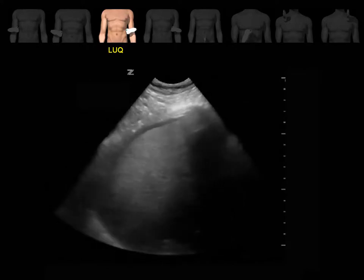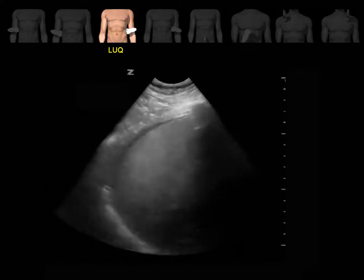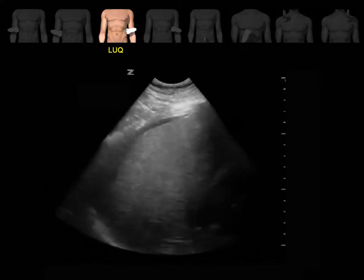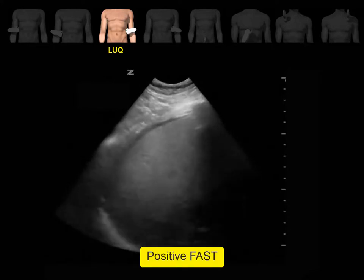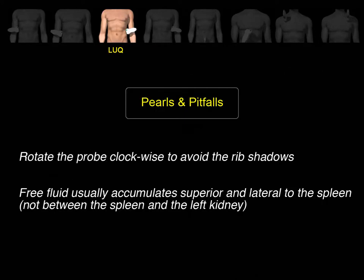In this clip, you can see free fluid between the spleen and the diaphragm — another example of a positive FAST exam. The probe may be rotated slightly clockwise so it fits obliquely within the intercostal spaces. Free fluid usually accumulates superior and lateral to the spleen, not between the spleen and the left kidney.